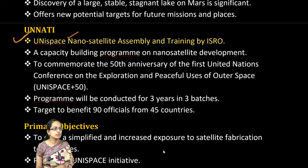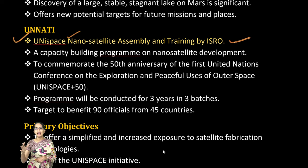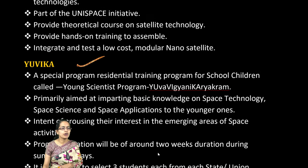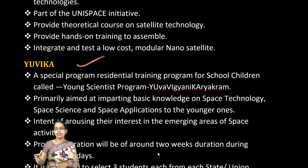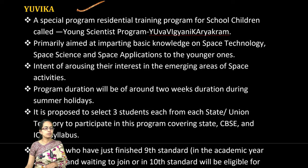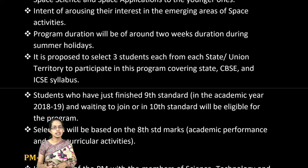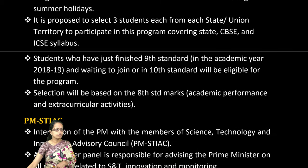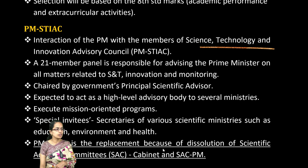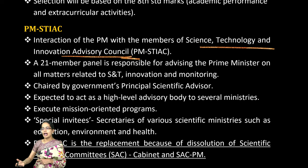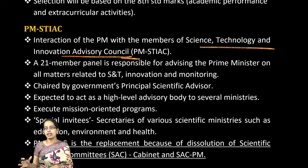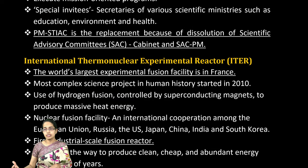UNNATI, which stands for Unispace Nanosatellite Assembly and Training by ISRO, is a capacity-building program for nanosatellite development conducted over three years in three batches. YUVIKA is a program for young scientists and promotes girl children in space technology and space science, selecting three students from each state from State Board, CBSE, and ICSE syllabi — students who have just completed 9th grade. STIAC, the Science Technology and Innovation Advisory Council, has 21 to 25 members working as special invitees discussing recent innovations.